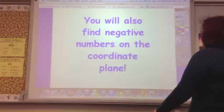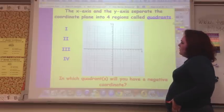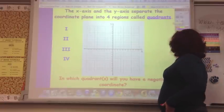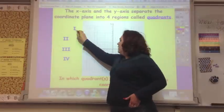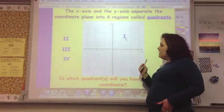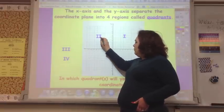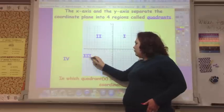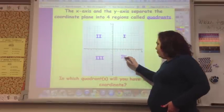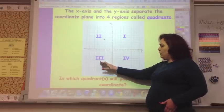Okay, so you also found negative numbers on the coordinate plane. The x and y axis separate the coordinate plane into four regions called quadrants. This is quadrant one, and that's where it's positive and positive. Then you go counter-clockwise to where this is quadrant two. This is quadrant three. Quadrant three is negative on the x, negative on the y, and quadrant four.